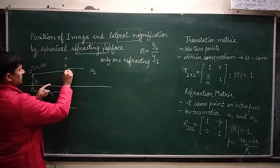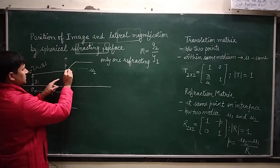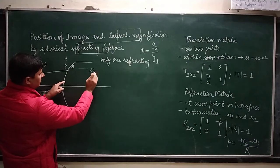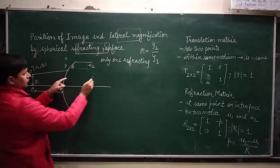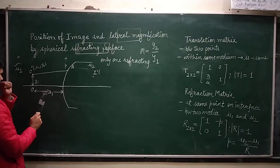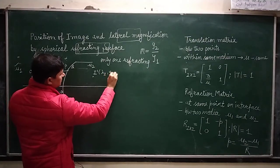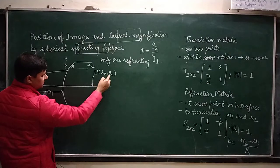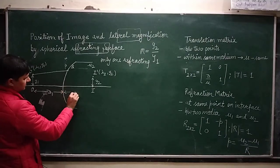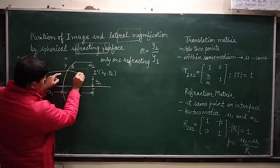At this point on the interface, refraction occurs. In the second medium, I take this point to be Q. Suppose image is formed here. The refractive index of the second medium is mu2. The optical coordinates of the image are lambda2 and y2. The height is y2, and this is where we get the image. The distance in the second medium is D2. From Q to I', there is translation.